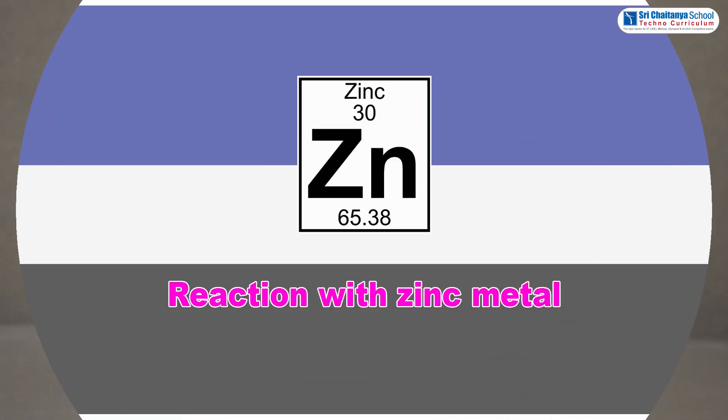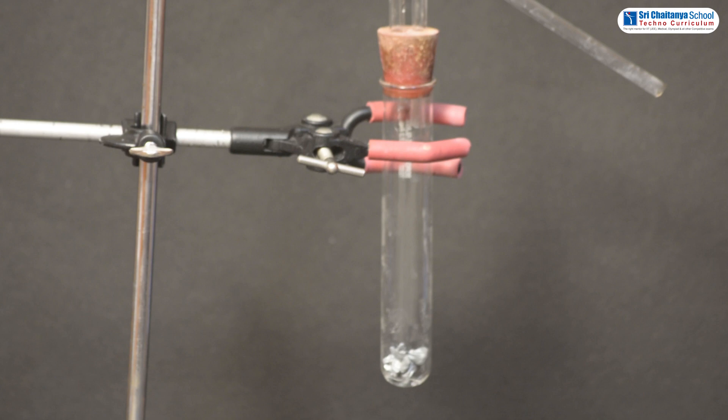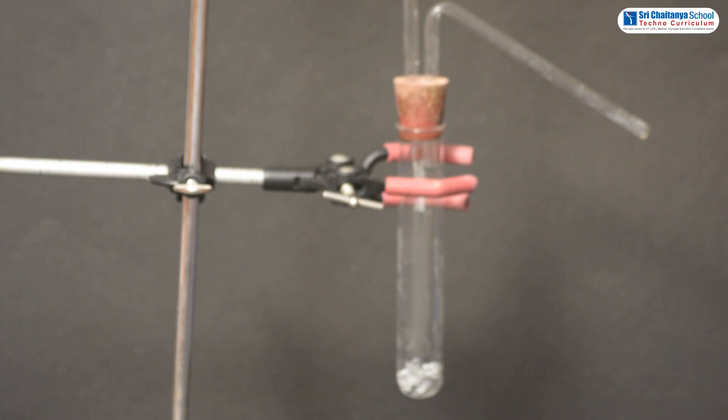Now we will do reaction with zinc metal. Take a few pieces of zinc in a boiling tube. Now add sufficient amount of NaOH solution to the boiling tube.